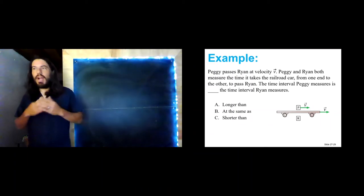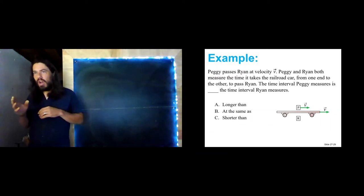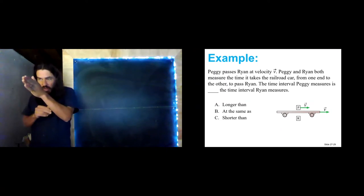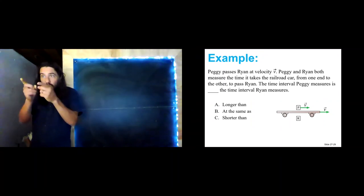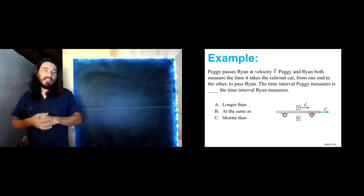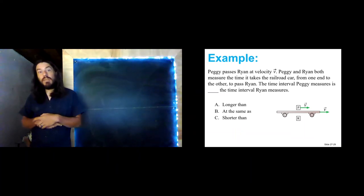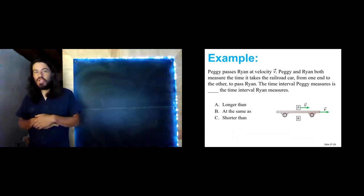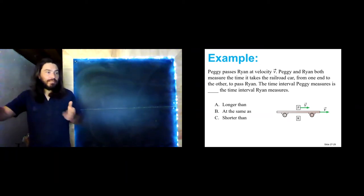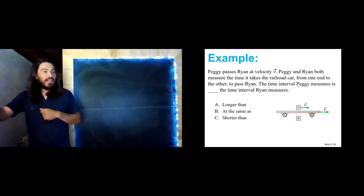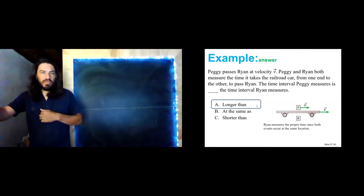Ryan measures the proper time, therefore Ryan measures the shortest time interval. The time interval that Peggy measures must be greater than the time interval Ryan measures, because Ryan measures the proper time and the proper time is the shortest time interval that anyone will measure.